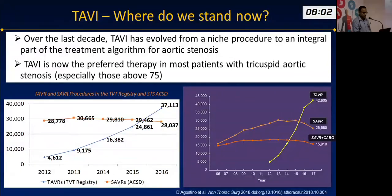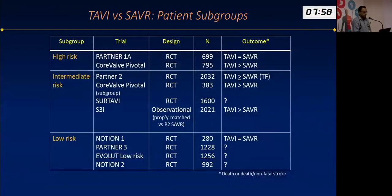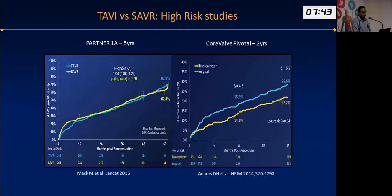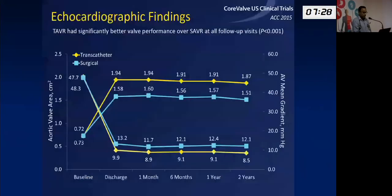We reached this position by gradually building up evidence across all levels of risk — high, intermediate, and now even low risk. Initial high-risk trials, the Partner 1A and CoreValve Pivotal trials, showed that TAVI is either equivalent or superior to surgery in selected populations. This benefit occurs very early after the procedure. By echocardiography, TAVI valves also perform much better than surgical valves — valve areas are good and gradients remain stable up to two years.